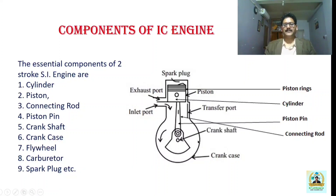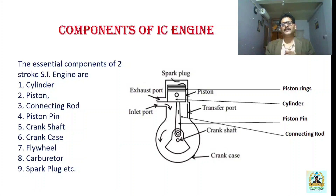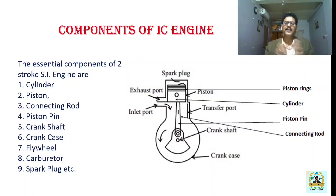The crankcase provides housing to the crankshaft. Then there is the flywheel, which is not shown in the figure. The flywheel works as an energy accumulator — it stores the energy developed during the power stroke and supplies the same during the idle stroke. The carburetor is also not shown; its function is to prepare the air-fuel mixture and supply it to the engine depending upon the requirement, as the fuel-air ratio varies with operating conditions.